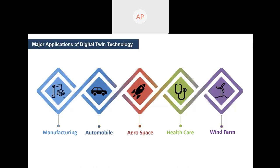Moving on to the other applications of digital twin technology, we could see that it's being applied in various fields like manufacturing, automobile, aerospace, healthcare, and wind farms. Having a digital copy of the products involved could create a great change in the working conditions of industries.